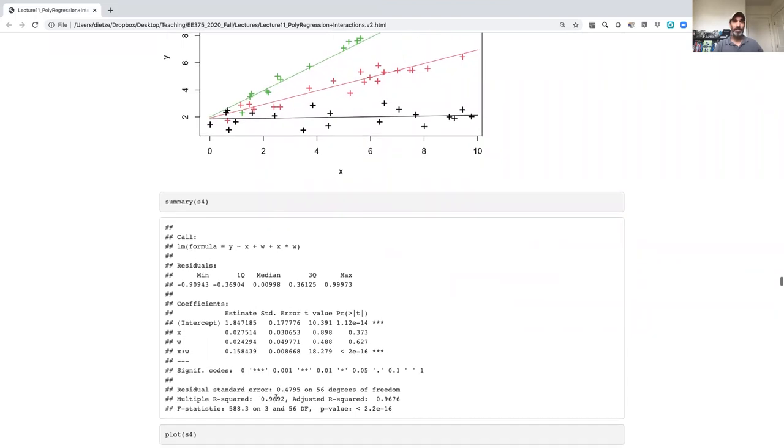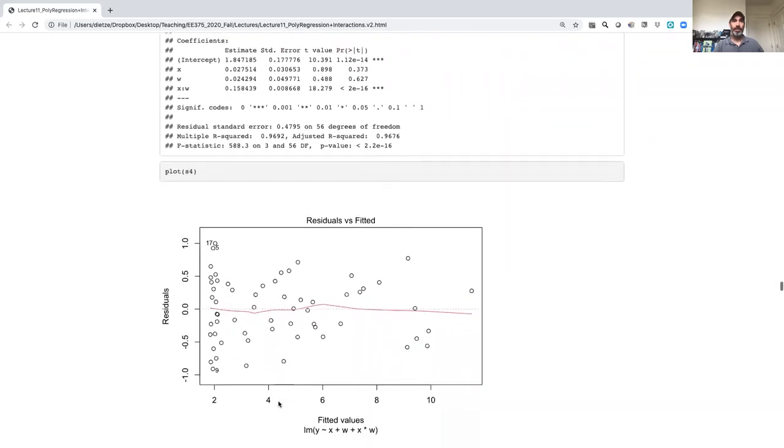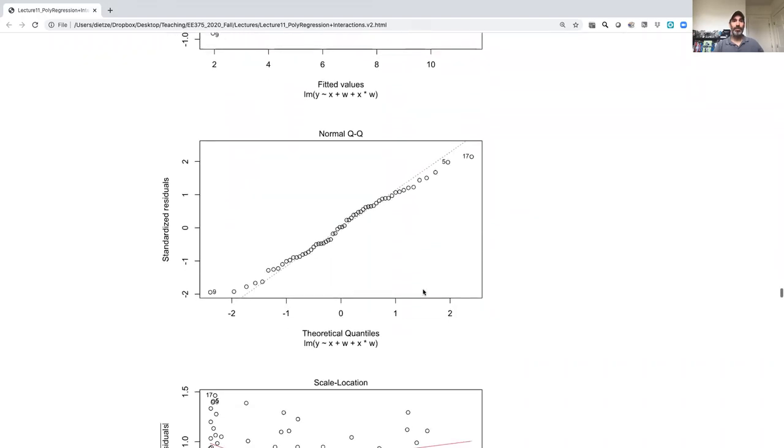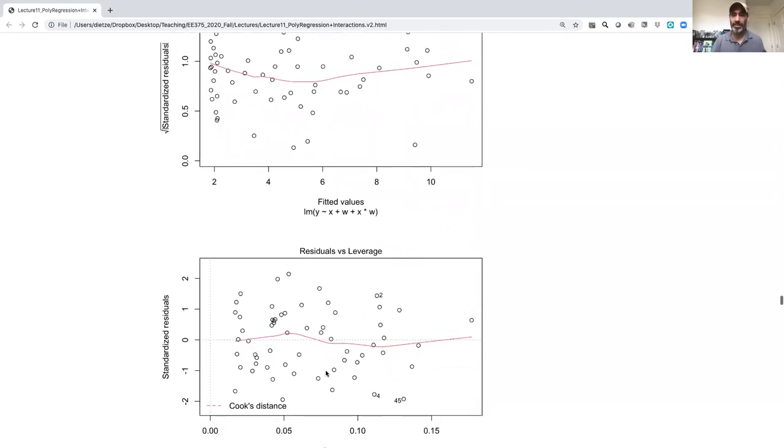So here we can see our interaction term is significant, our r squared is now up to 97%, and when we look at our residuals, there's no trend in our residuals, our qq looks fine, our scale location looks fine. So everything looks fine in this case because in fact this model is doing well, and in fact that's because we simulated this data in a way that conforms to that assumption just for the purposes of demonstration.